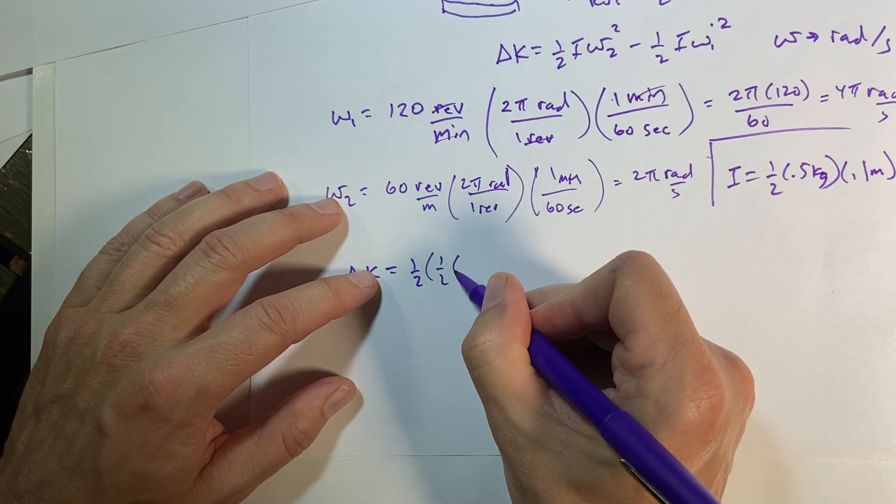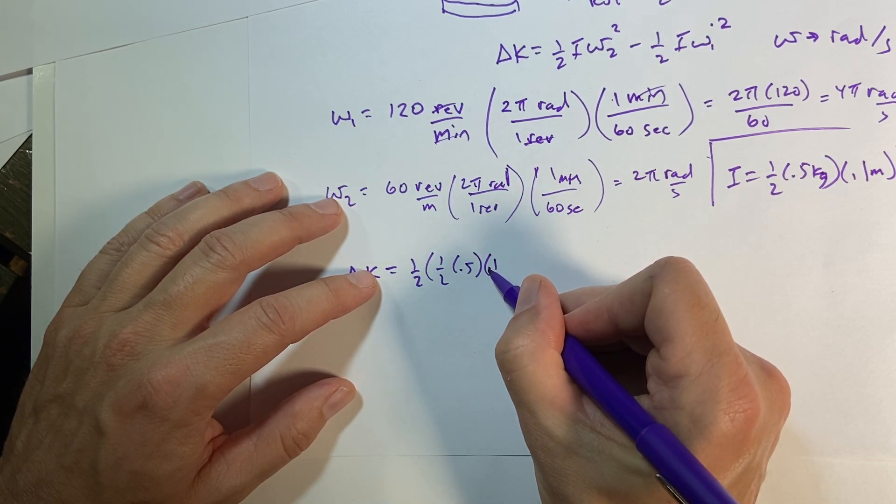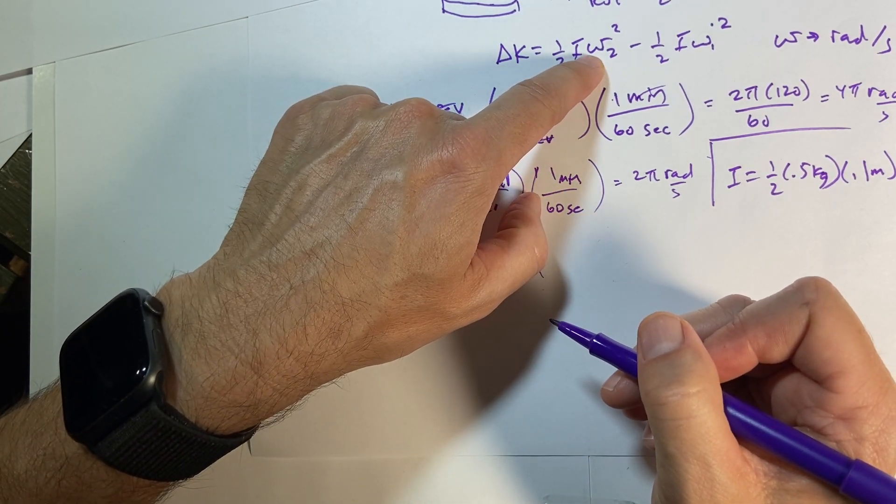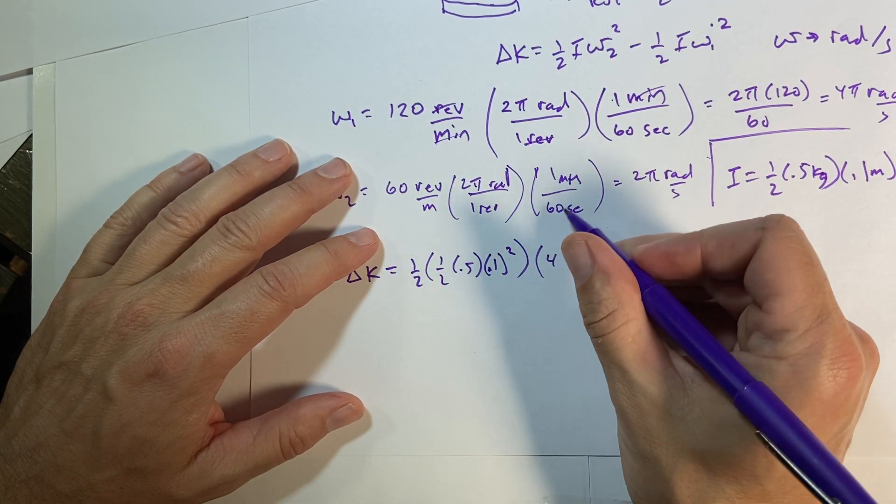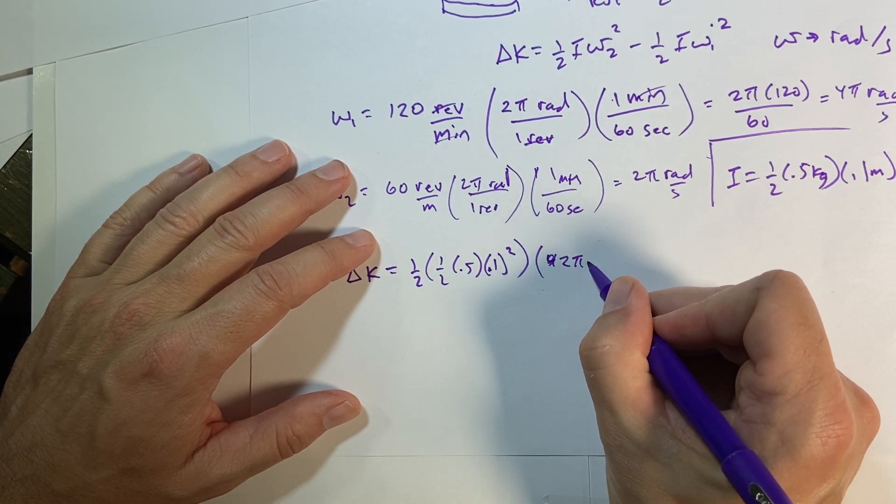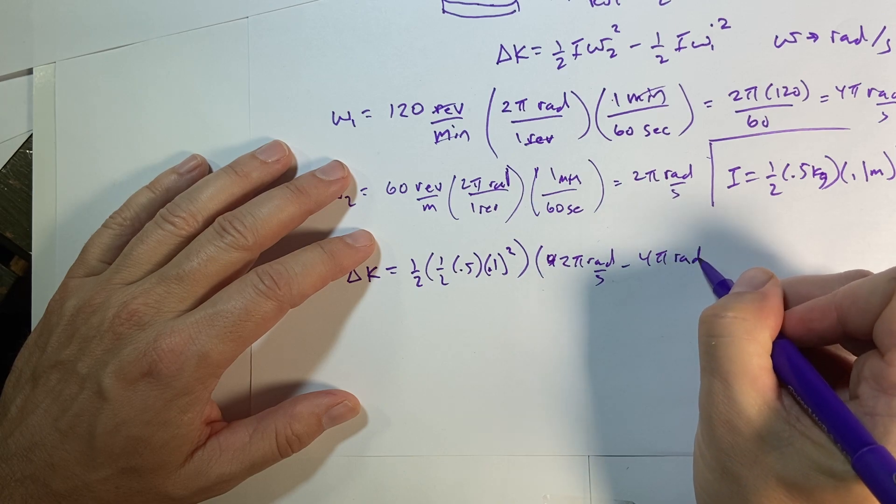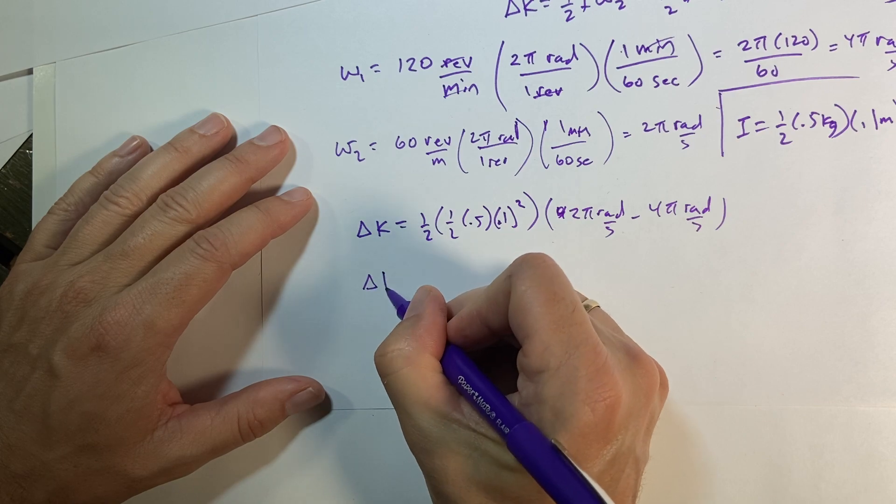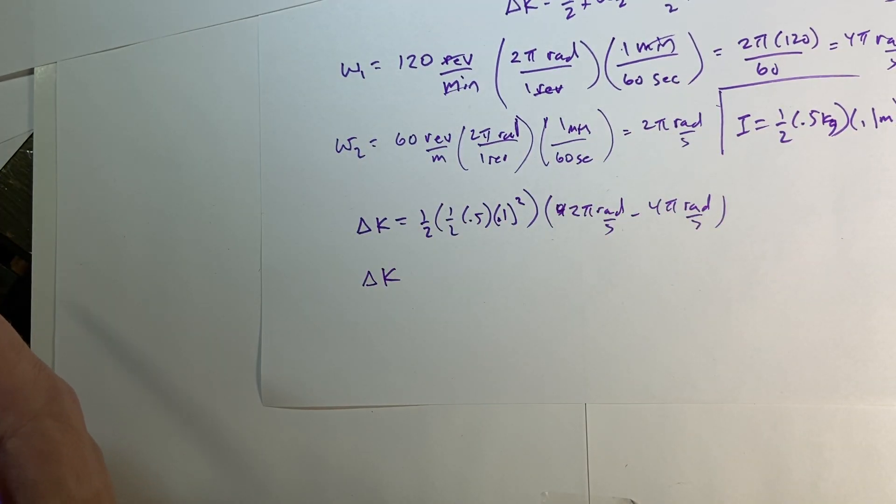and then I get 1 half .5 times .1 squared. And then I have to do the change in the rotational velocity. Now the final is going to be 2 pi radians per second minus 4 pi radians per second. And so the change in kinetic energy, it's going to be negative because it's going to decrease in kinetic energy, which means it's going to increase in thermal energy.